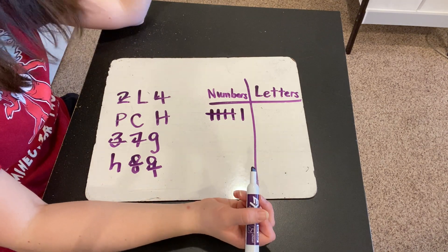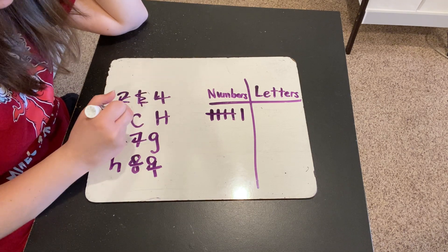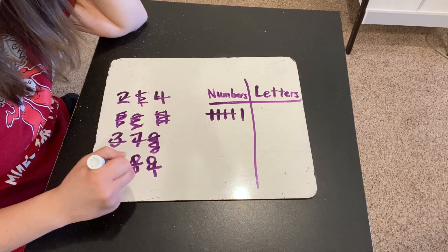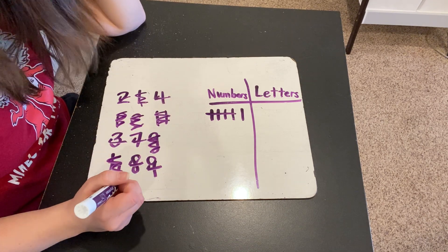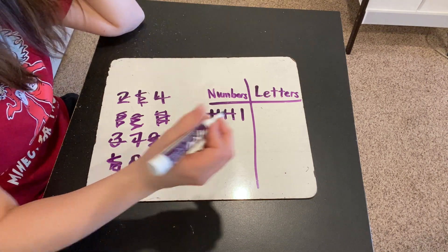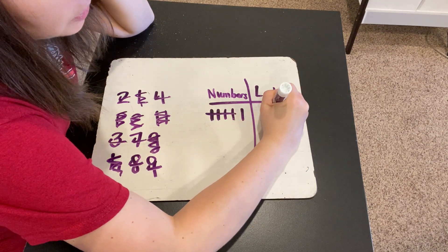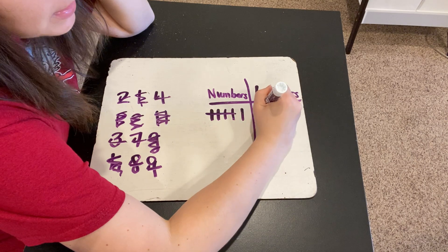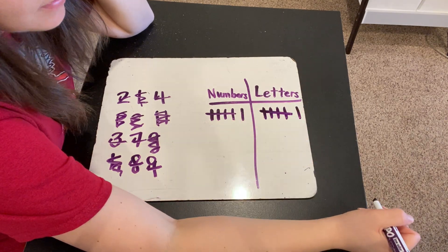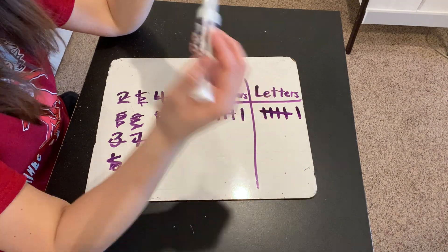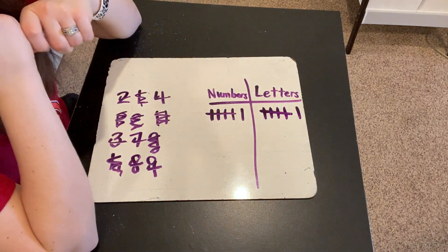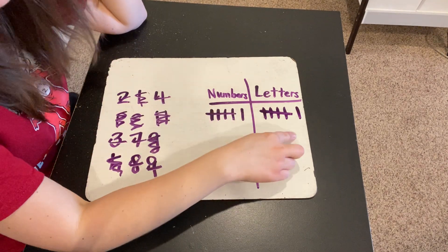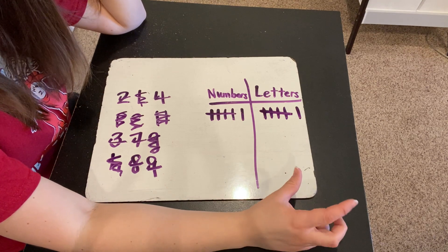Now, how many letters do we see? Let's see: 1, 2, 3, 4, 5, 6. So there are 6 letters also. We're going to make 6 tally marks for letters: 1, 2, 3, 4. What happens when I get to 5? Close the gate. 5, 6. So letters and numbers — did we have more letters or more numbers? Neither, right? They were both equal. We had an equal amount of numbers and an equal amount of letters because we had 6 of each.